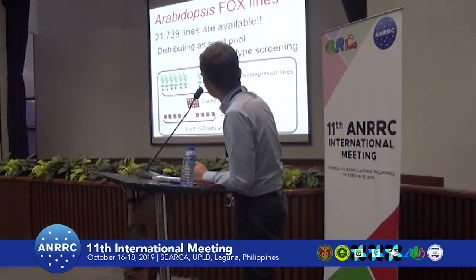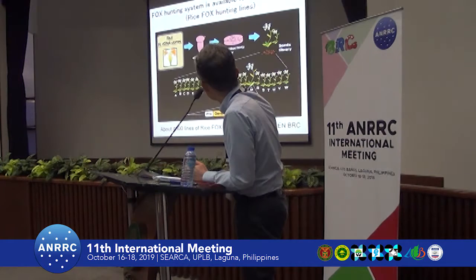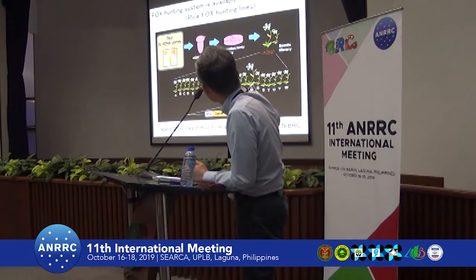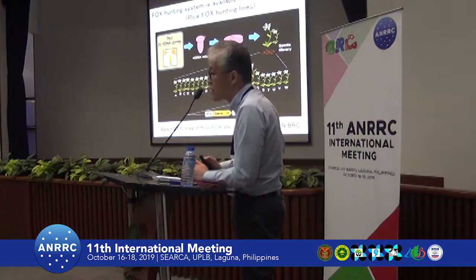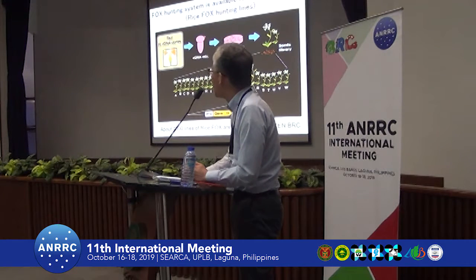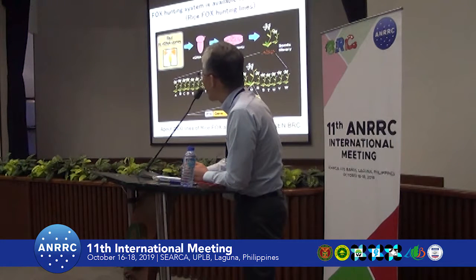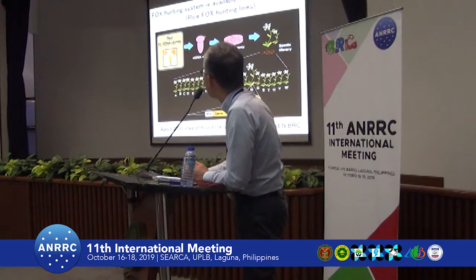We can distribute more than 21,000 FOX lines. We also distribute 4,000 lines of the rice FOX hunting lines. Using the rice FOX hunting lines, we can identify and analyze the gene function of the rice genome using the Arabidopsis system. This is a very good system.